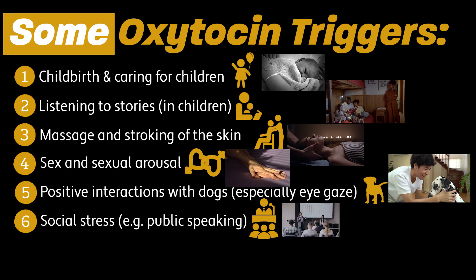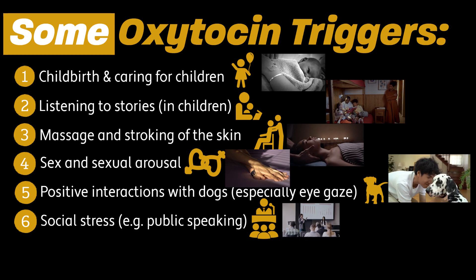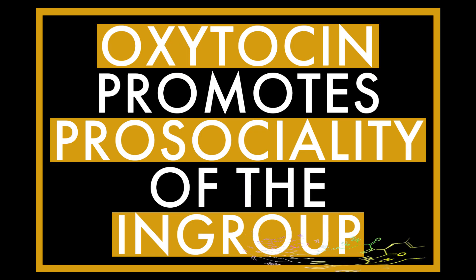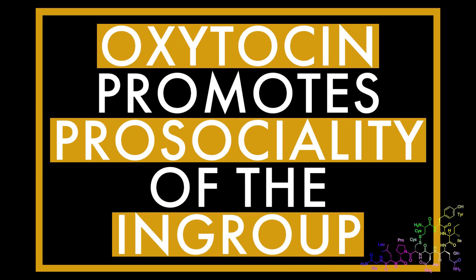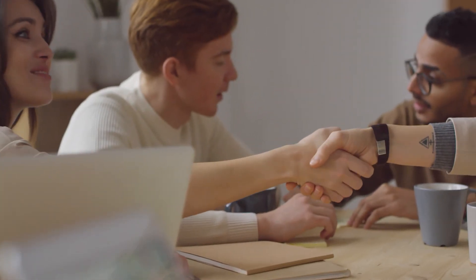Now that we know when oxytocin is released, let's look at the effect it has on social behavior when researchers purposefully increase oxytocin levels in subjects. Let's start with how oxytocin promotes prosocial behaviors of the in-group. To be prosocial means to be positive, helpful, cooperative, empathic, and/or trusting toward other people.